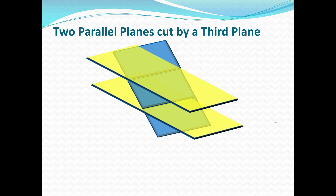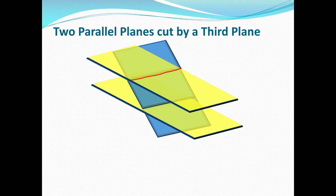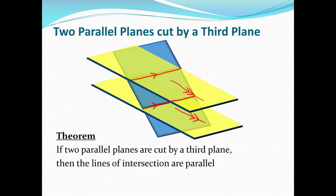Let's say you have two parallel planes cut by a third plane. The intersection of two planes creates a line — just as two lines intersecting creates a point. So what can we say about the two lines of intersection if the two planes are parallel? The theorem states: if two parallel planes are cut by a third plane, then the lines of intersection are parallel. Since we have a theorem, it can be proven. Our hypothesis is two parallel planes cut by a third plane, and we want to prove that the two lines of intersection are parallel.